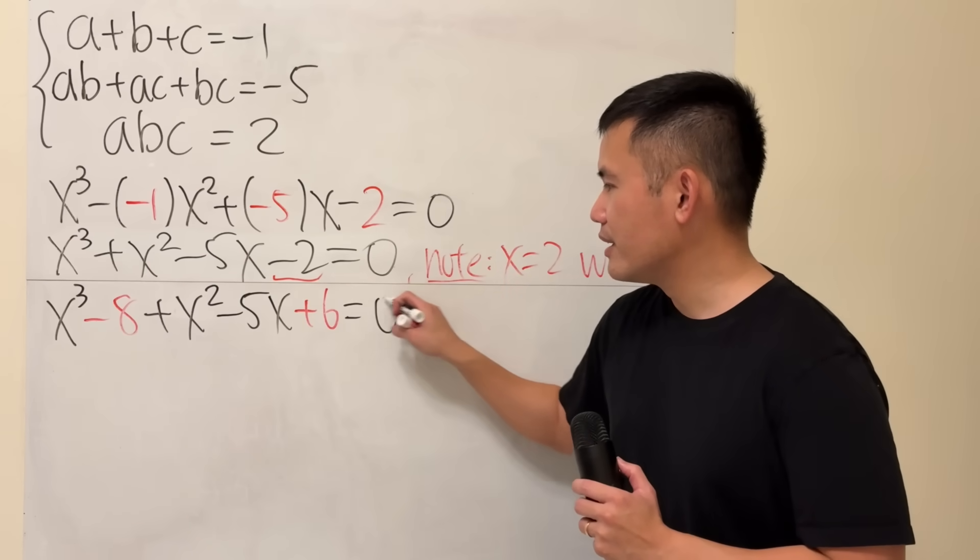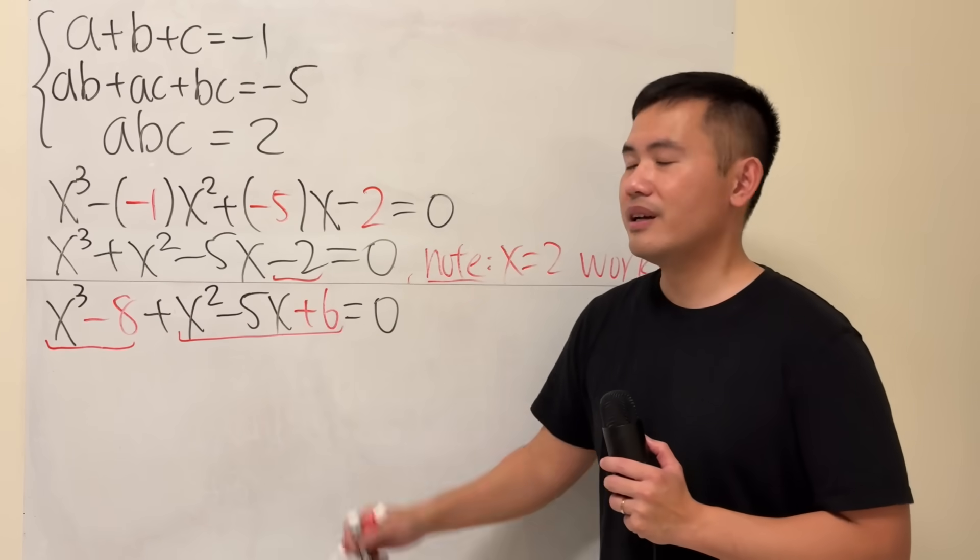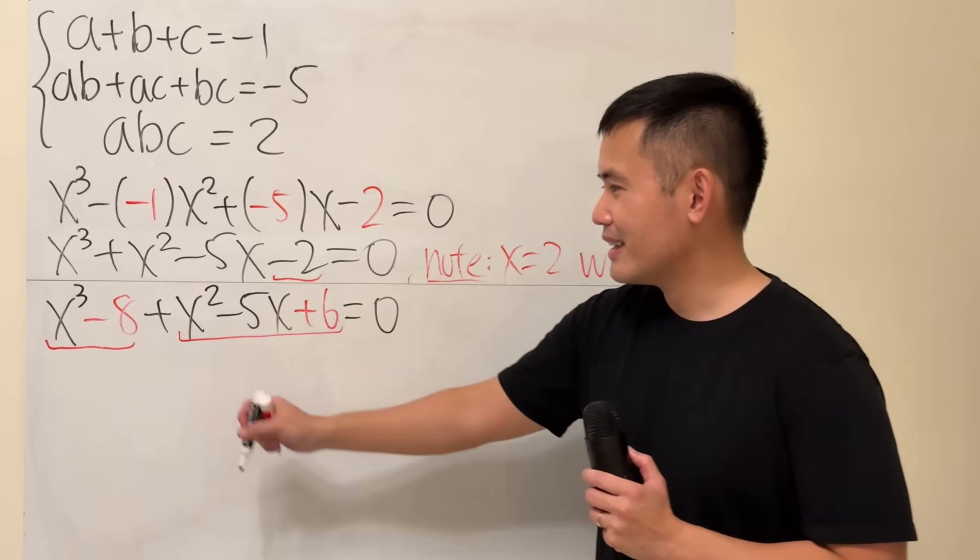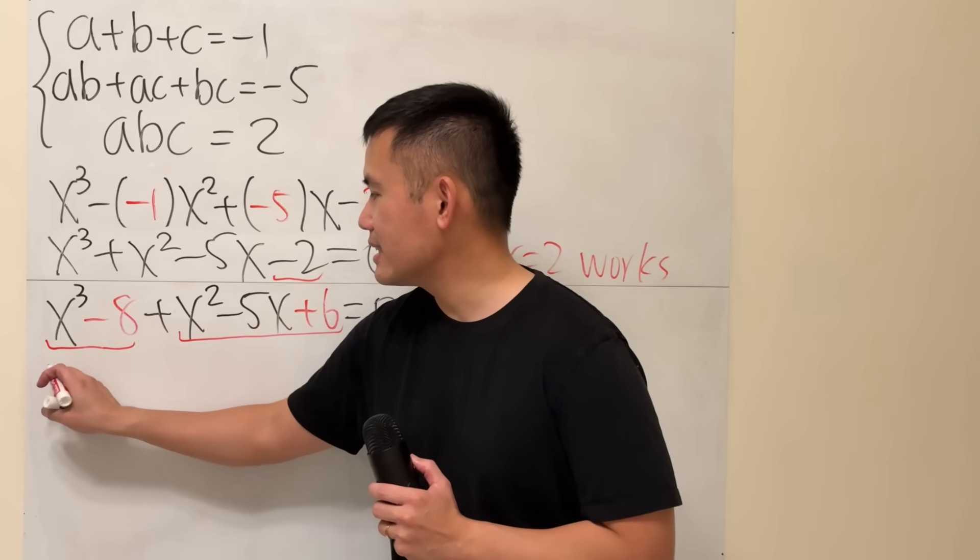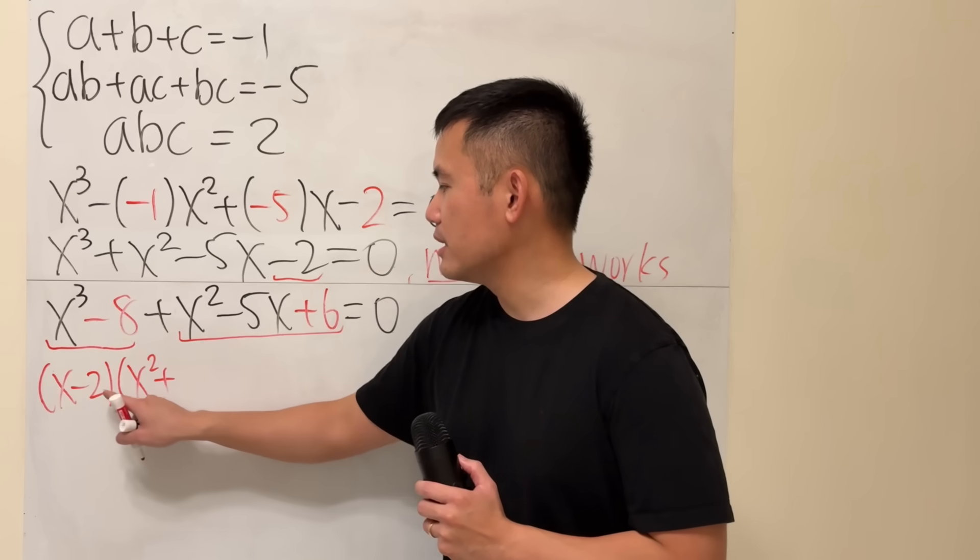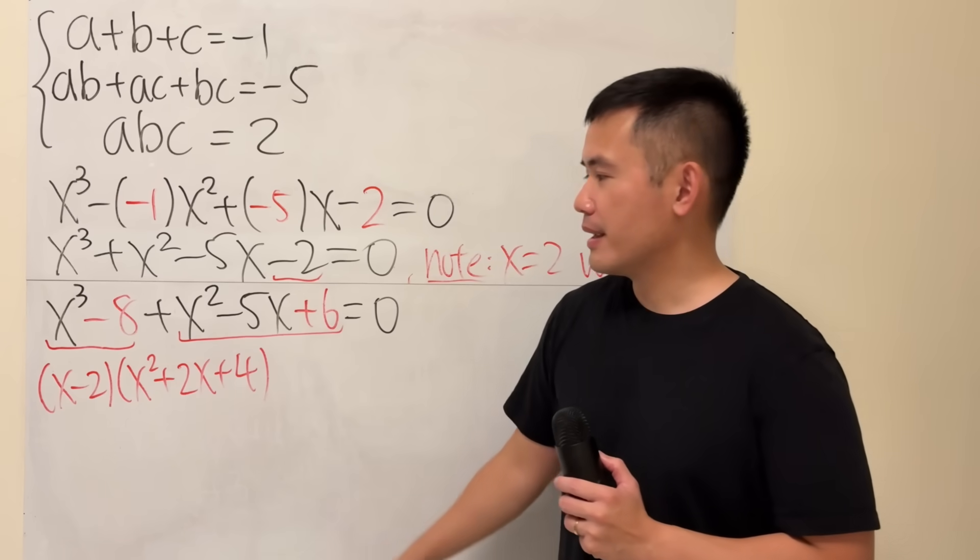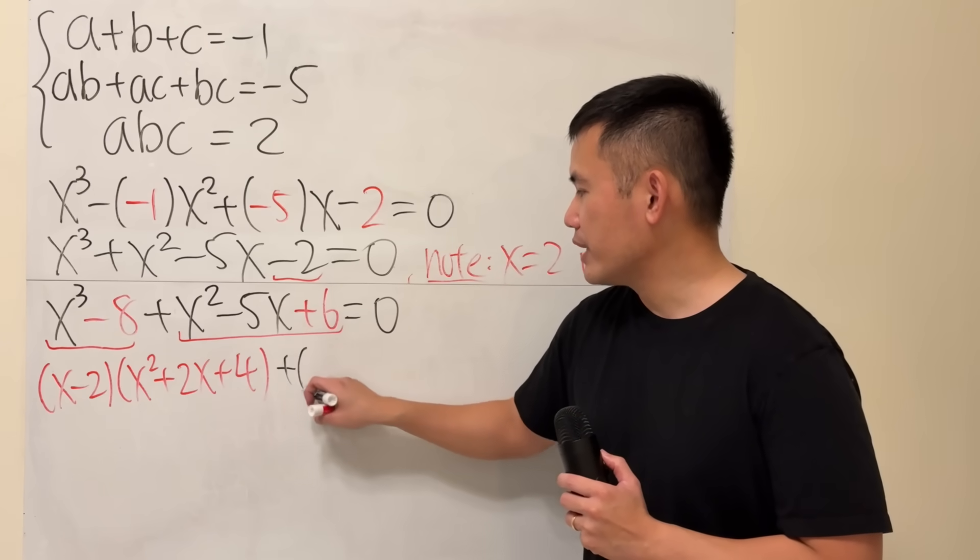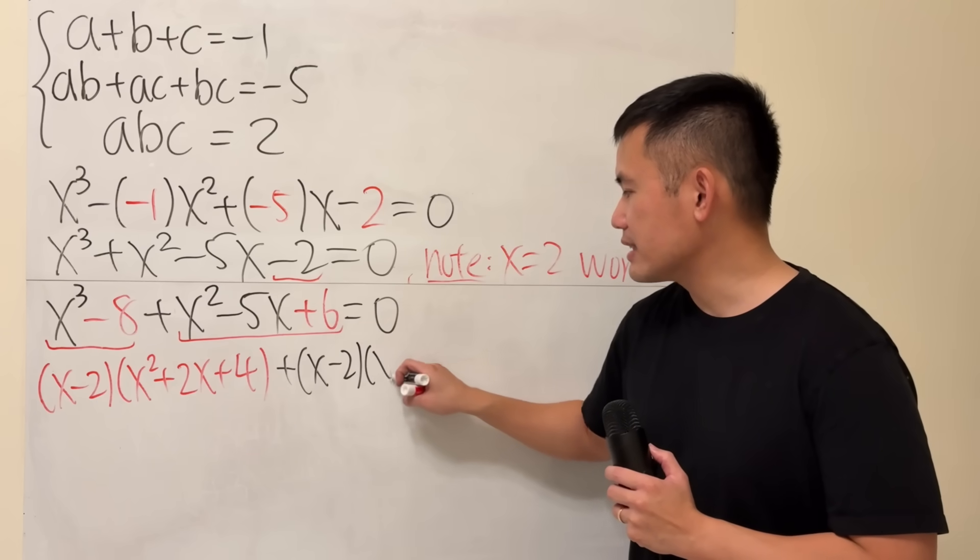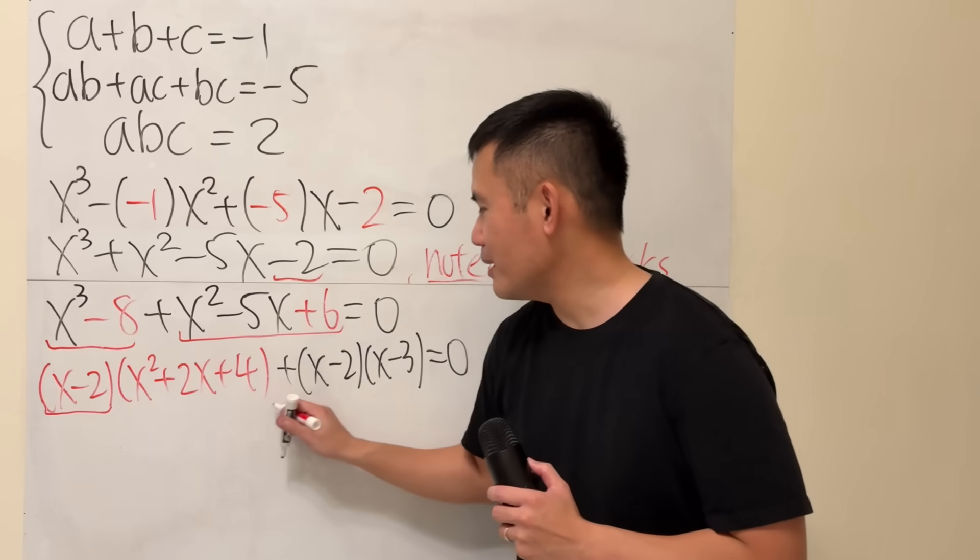And then I'll tell you, if you now look at these two terms and these three terms, it's factorable. X cubed minus 2 cubed, we get X minus 2 times X squared plus 2 times X plus 2 squared, which is 4. Factoring this, we get X minus 2, X minus 3. And we see X minus 2 is in common. So let's factor that out.